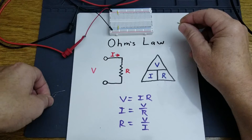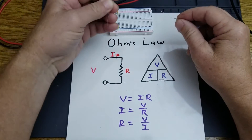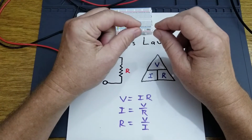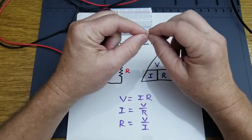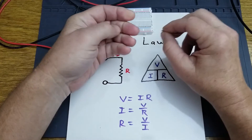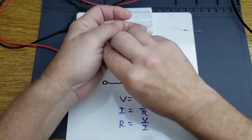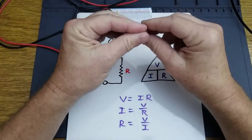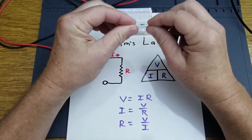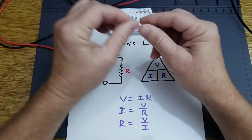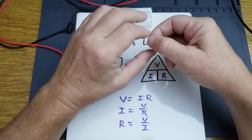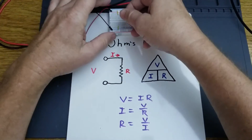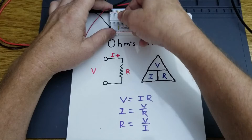In this demonstration, I've got a couple of 1,000-ohm resistors and a 500-ohm resistor. What we're going to do is put a 1,000-ohm resistor in a breadboard and put 10 volts across it.